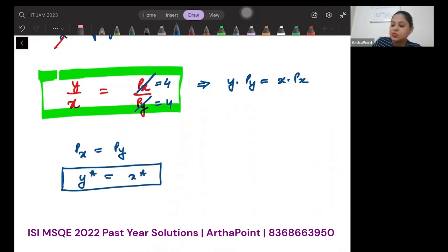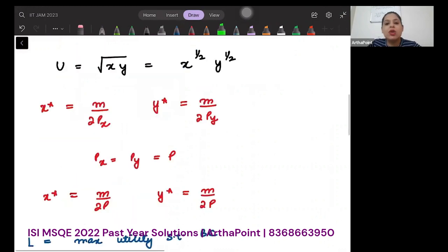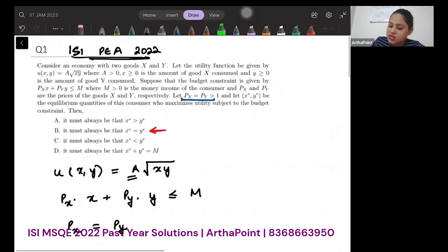This is what I will get - that I will be consuming x and y in equal quantity. So the answer to this question is, it must always be in this case that x* and y* will be equal to each other. That's the answer.